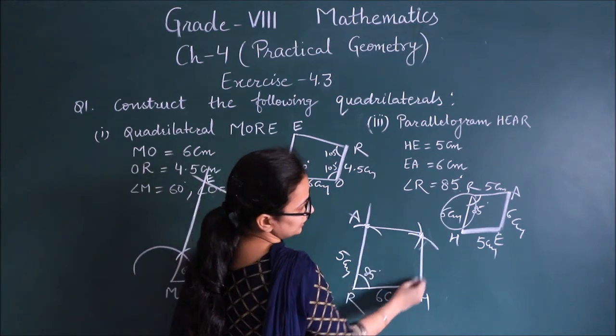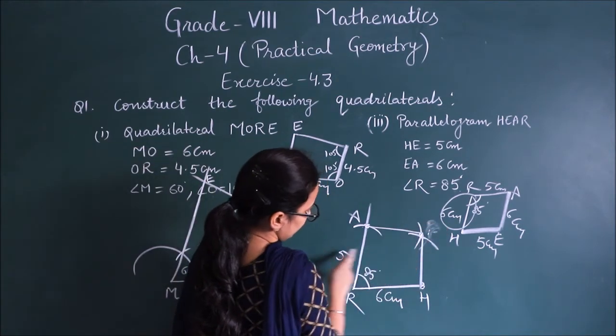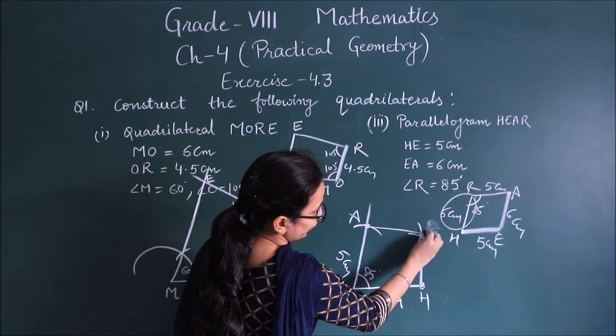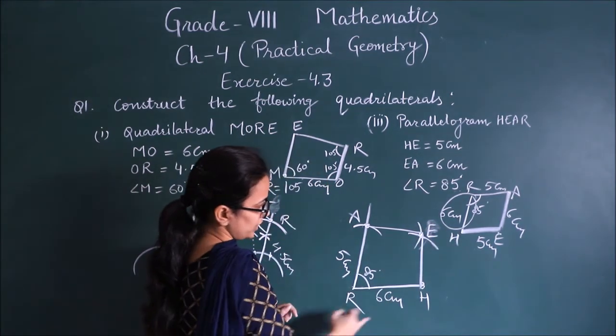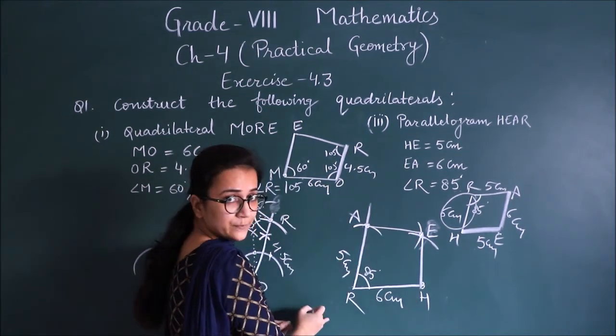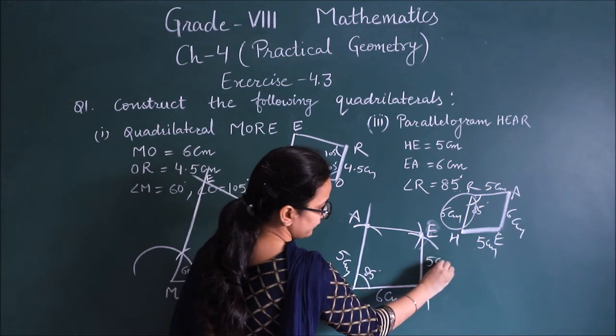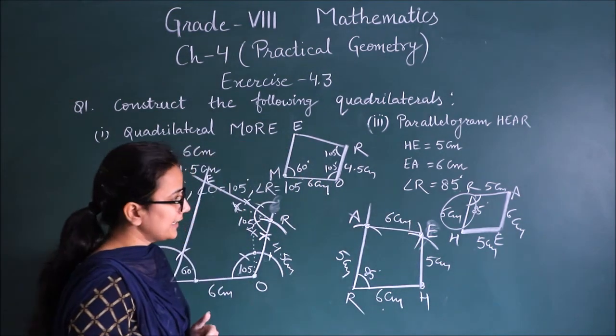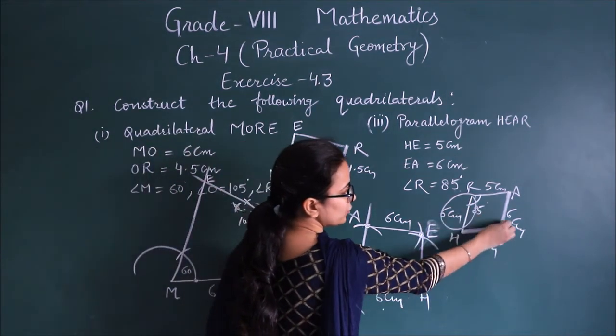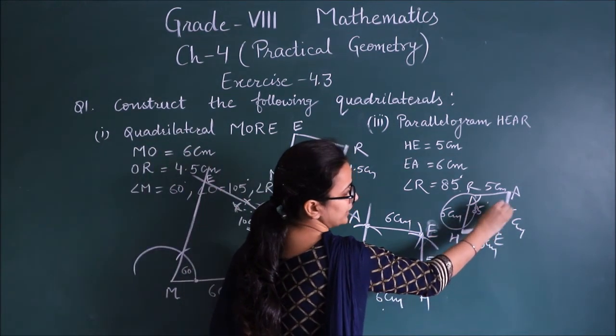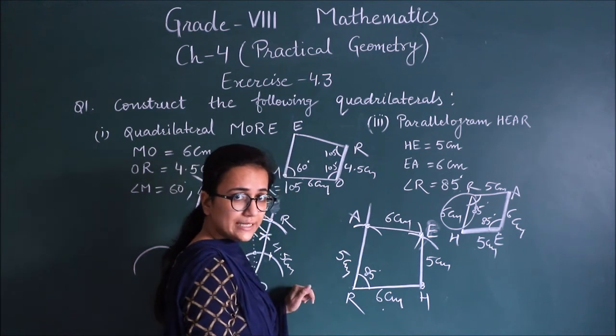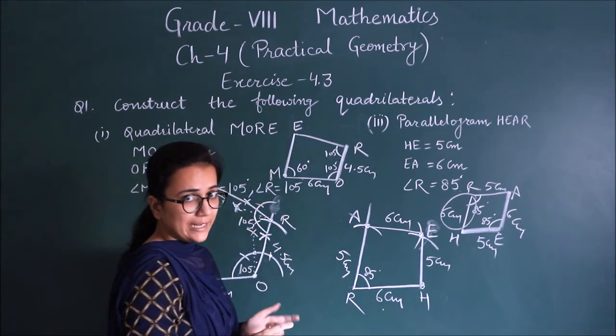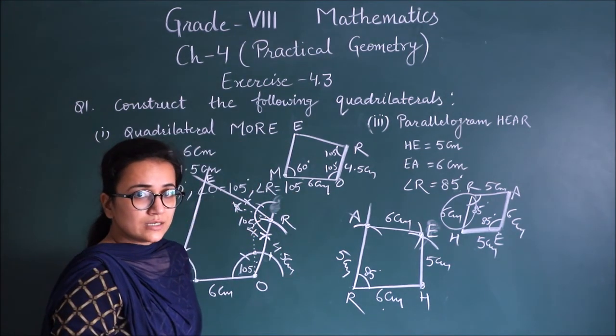This point will get both of you. This point is A, R, H. This is point E. So this is H, E, A, R. If this was 5, then this is 5. If this is 6, then this is 6. You can take one help. If this is 85, then the opposite angles are equal. If this is 85, so if you have to do this, you can help with angle help.